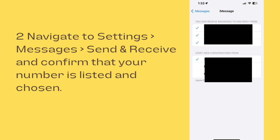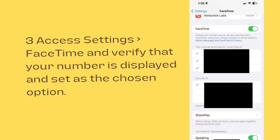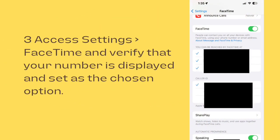Navigate to Settings, then Messages, then Send and Receive, and confirm that your number is listed and chosen. Also access Settings and FaceTime, and verify that your number is displayed and set as the chosen option.